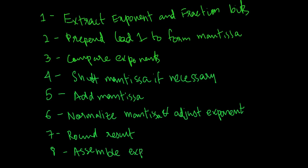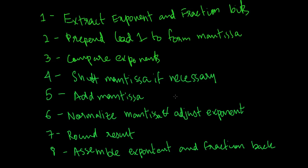The last step is to assemble the exponent and fraction back into the floating point number format — this is how we represent the 32-bit result, remove the implicit leading one, and encode the bits back into floating point format for addition and subtraction.